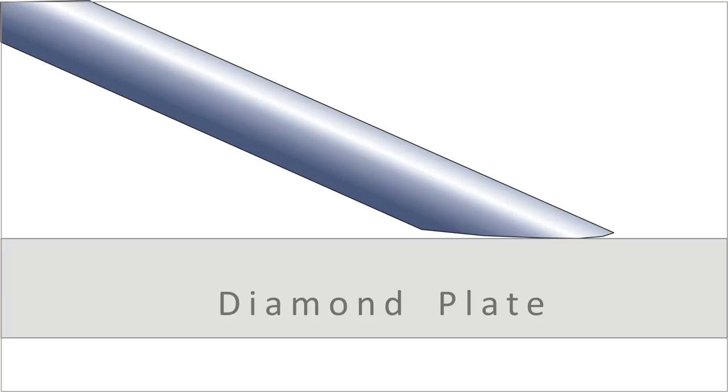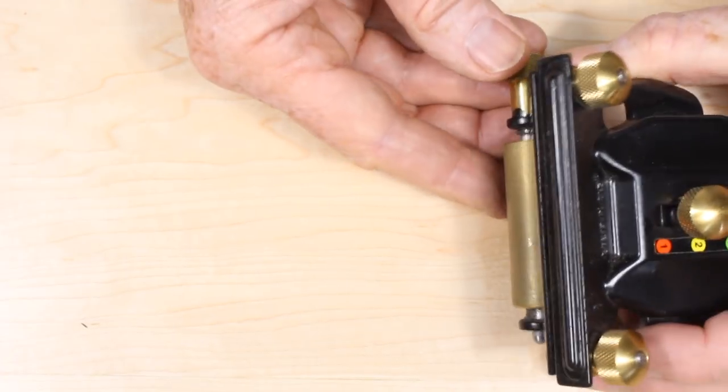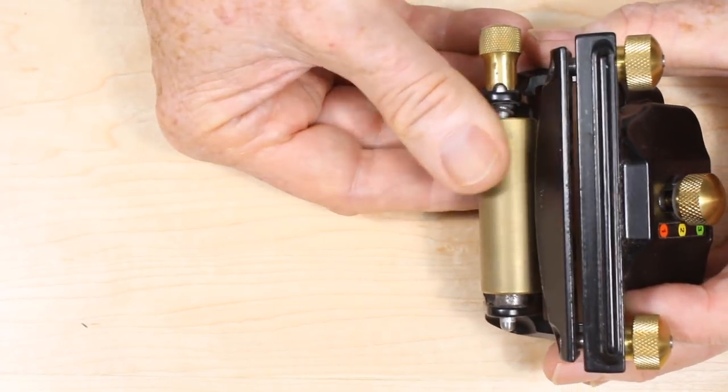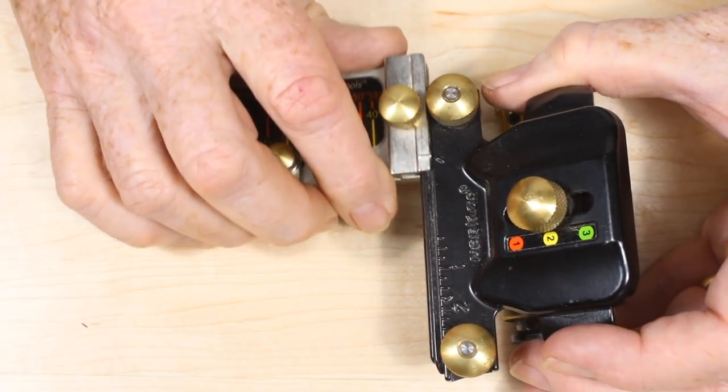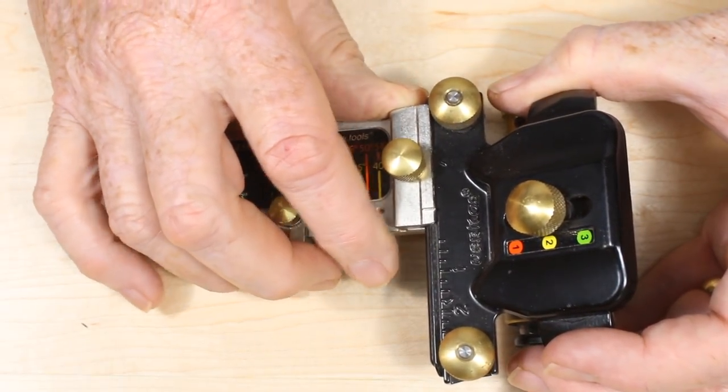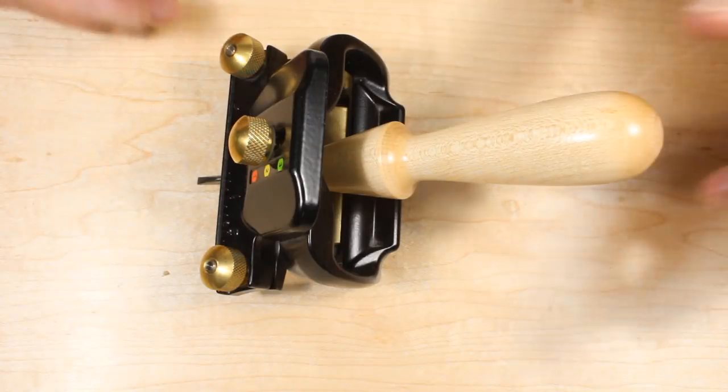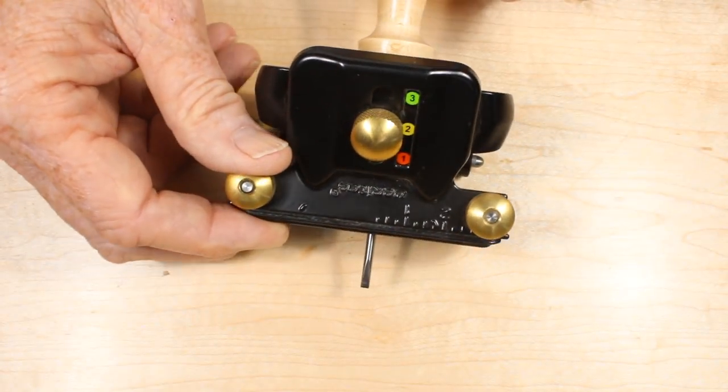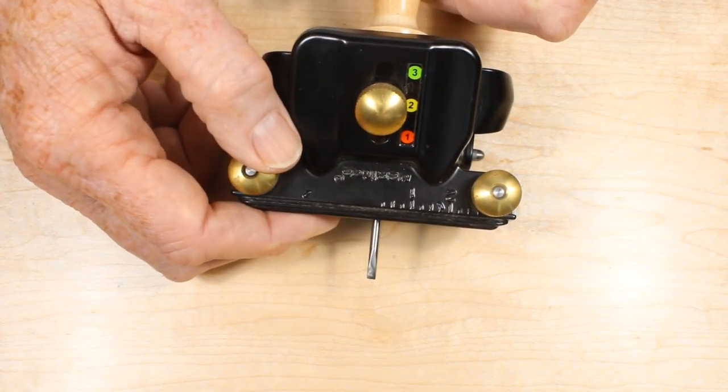The solution is a jig to hold the blade at a constant angle to the sharpening plate. There are lots of clever devices out there on the market. Here's my favorite jig from Veritas. It's fairly expensive, but it's versatile and reliable with some very nice extra features.